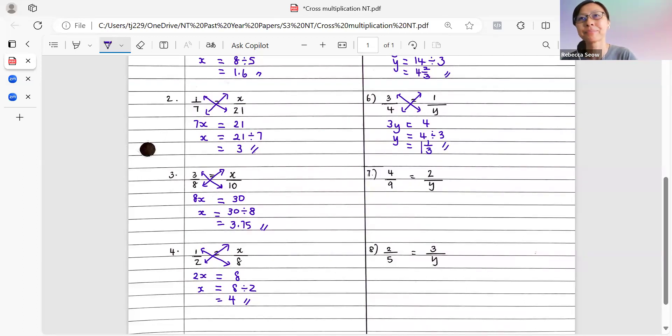Now, next, 4 out of 9 equals to 2 out of y. We draw in the diagonals. We multiply 4 by y. So that gives us 4y equals to 9 times 2, which is 18. So we have y equals to 18 divided by 4, which gives us 4.5.